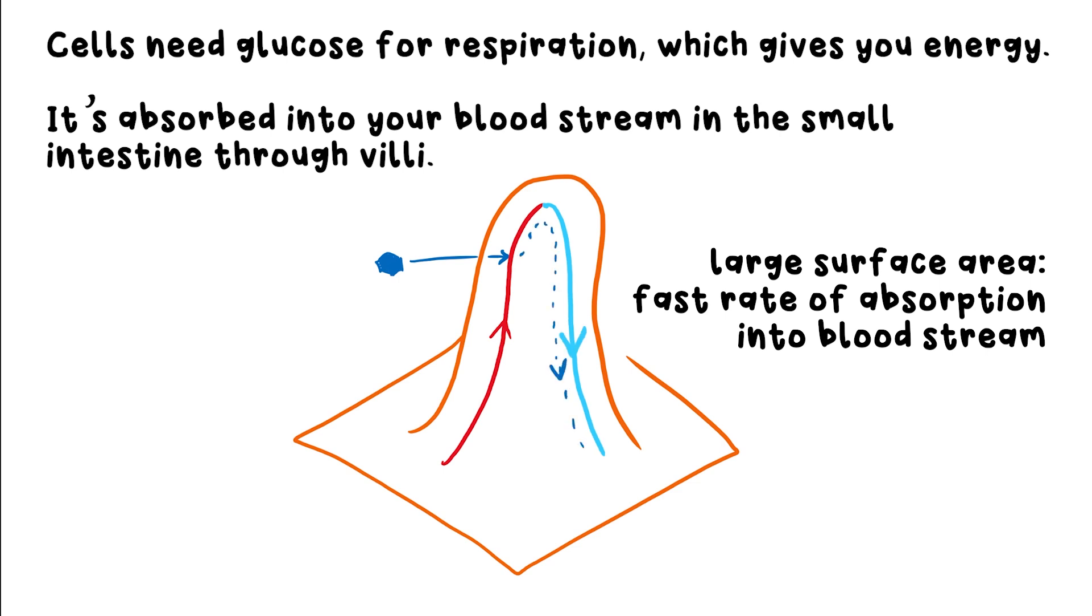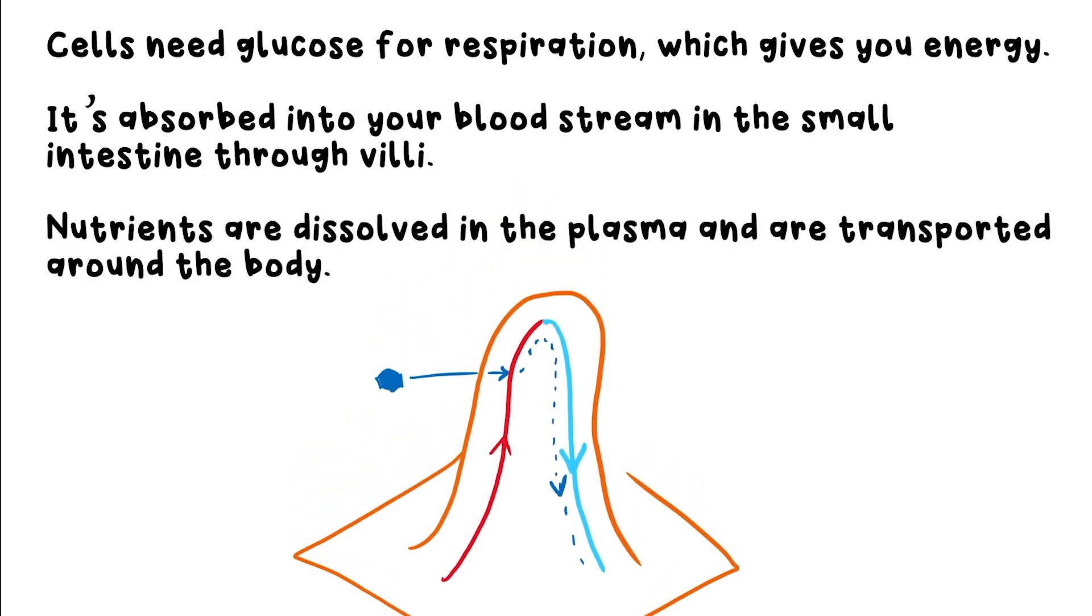Incidentally, this happens by active transport. If you don't know what that is, have a look at my diffusion, osmosis, and active transport video. Glucose and other nutrients are dissolved in the plasma of your blood, which carries them to every part of your body, providing every cell with what they need for respiration and other functions.